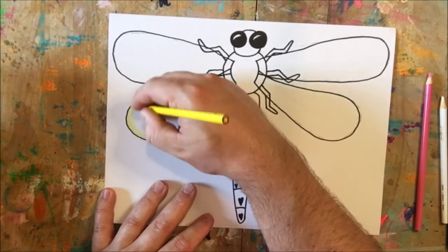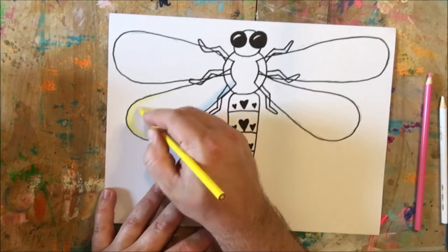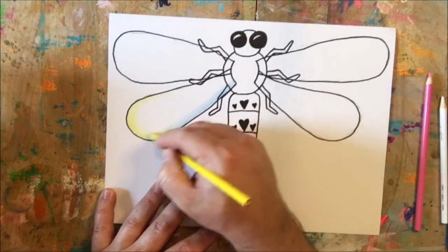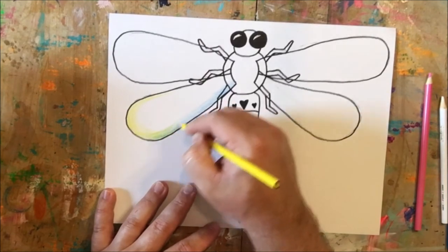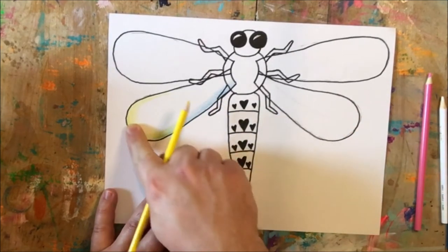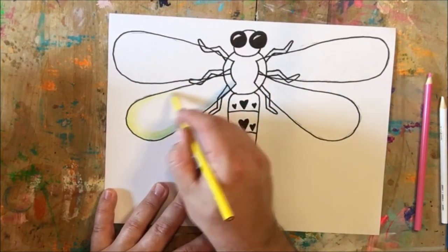And when I come in with my yellow, once again, I'm coloring lightly. I'm just coloring along the edge. And I'm just going to overlap some of that area there where I colored my yellow and my blue. And you can see where my yellow and my blue overlap, I'm creating green here in the wing.